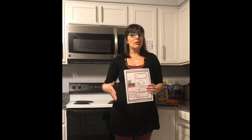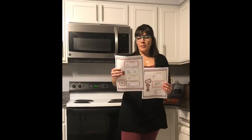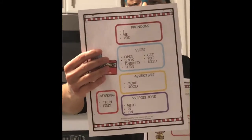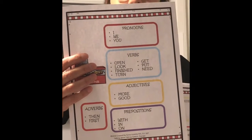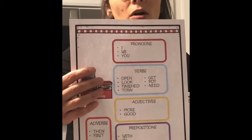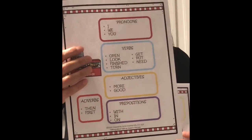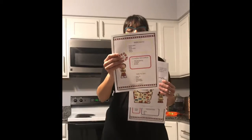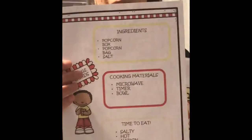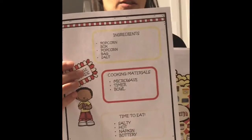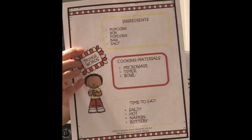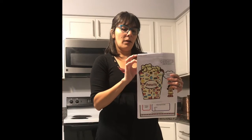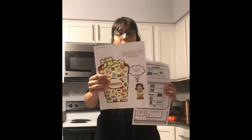I have some of the visuals included in the product — this is just some of them, not all of them. The first one is my core words that I'll be able to target in this activity. My second visual is a sheet that tells you what materials you need and vocabulary you might use, which you can display for students — those are the fringe vocabulary words.